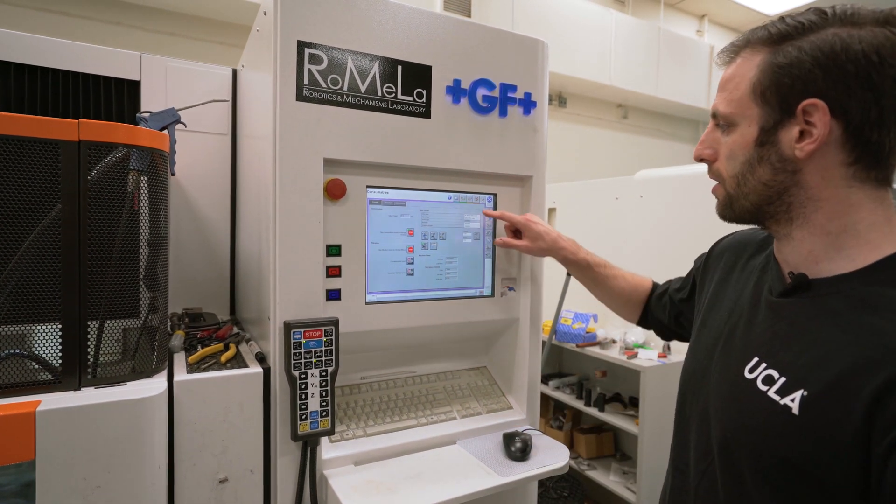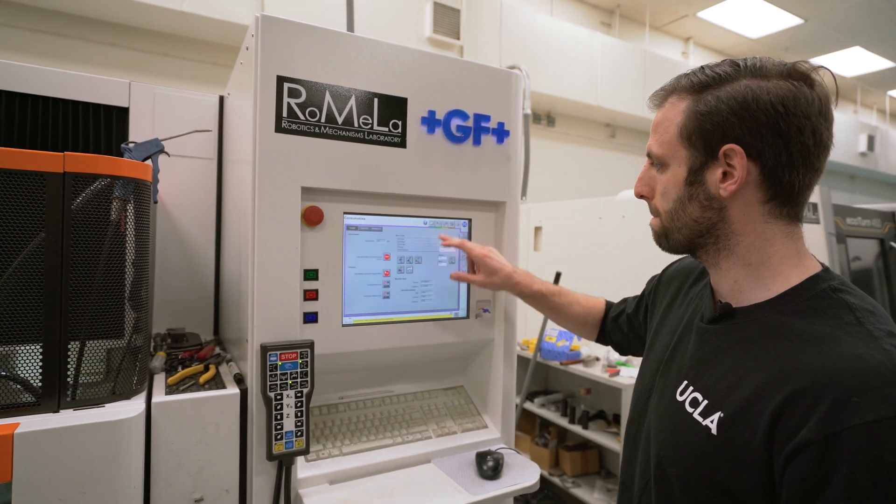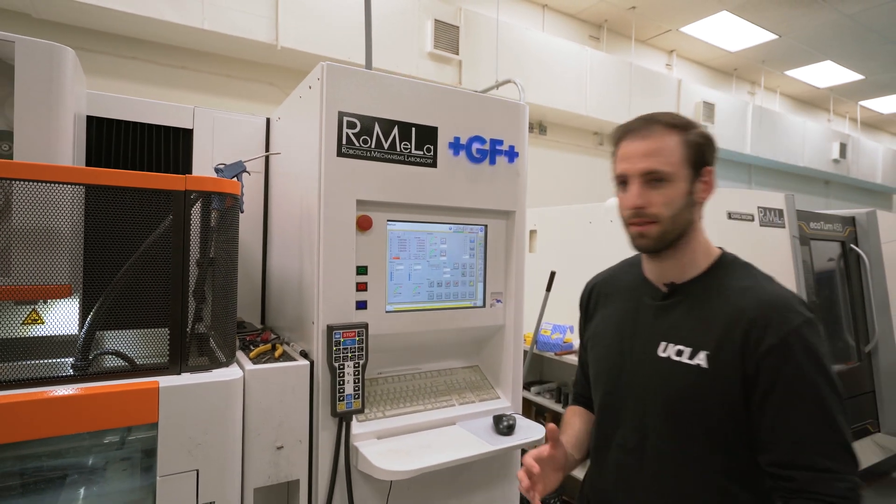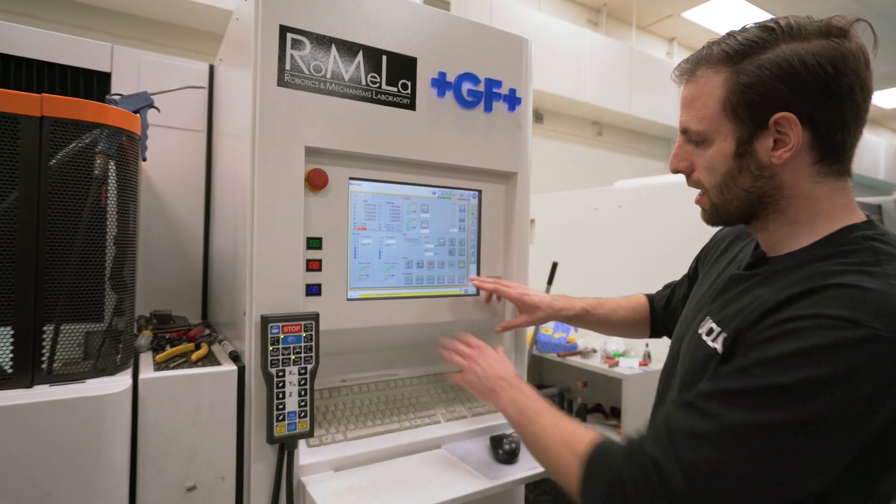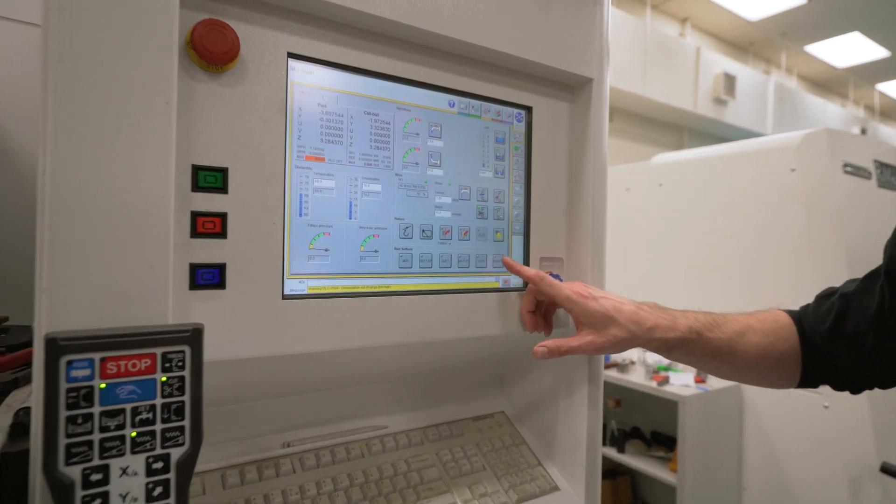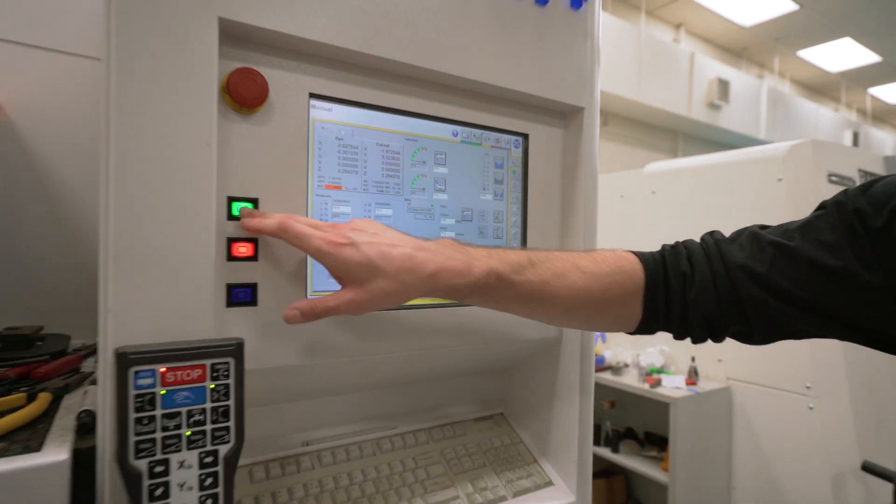So the first thing that we're going to do is come over here. We're going to turn on the pumps, fill up the tank because the machine's going to move during the greasing process. And then right here on the manual page, we have our user buttons and all the way to the right is the greasing macro. So we're going to hit that and we're going to hit go.